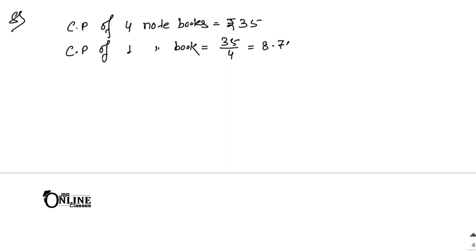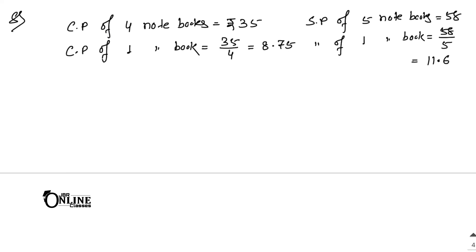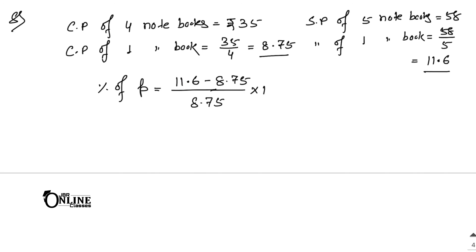SP of 5 notebooks equals 58, so SP of 1 notebook equals 58 by 5, which is 11.6. Since SP is greater than CP, there is profit. Percentage of profit equals (11.6 minus 8.75) divided by 8.75, into 100. 11.6 minus 8.75 equals 2.85, divided by 8.75, into 100.